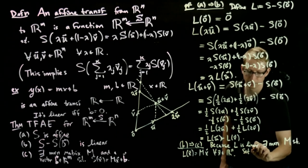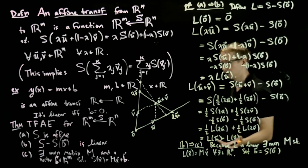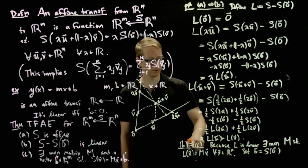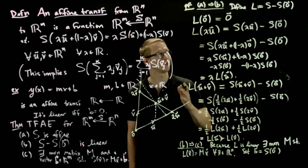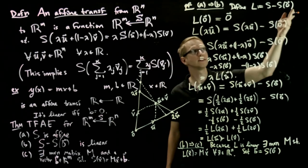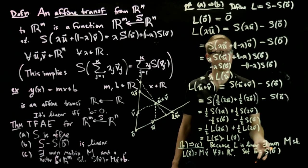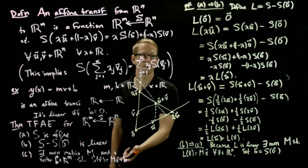So set b to be equal to s(0). And when we set that to be that, then since L is s - s(0), then we take s = L + s(0), which is b, then we get the equation of the form s(x) = Mx + b.